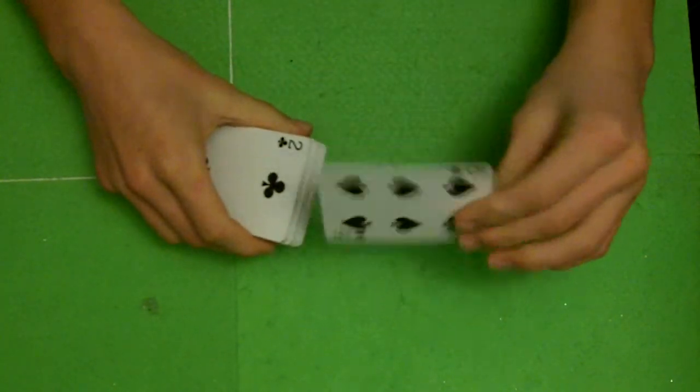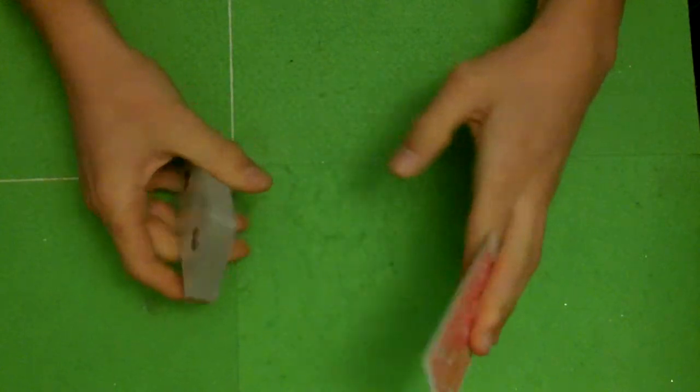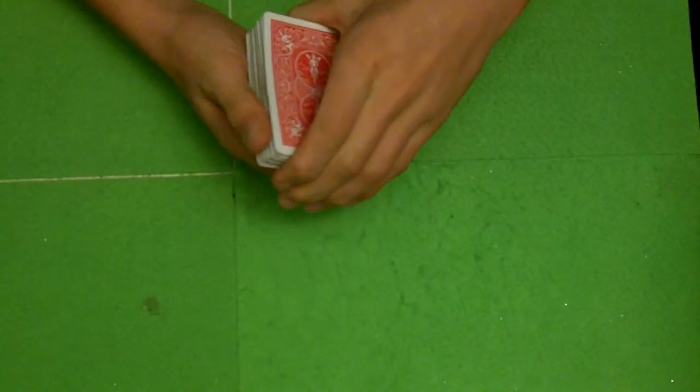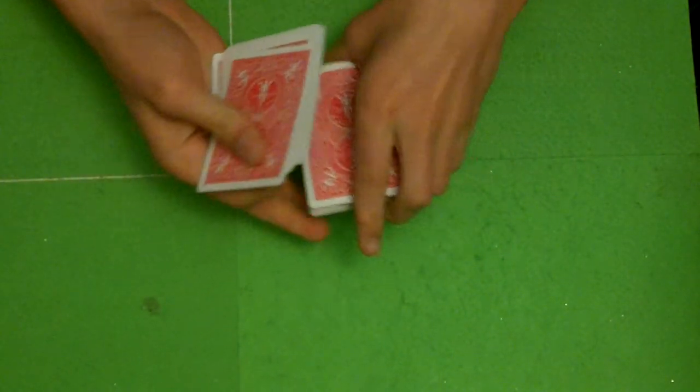So we'll show them, six of spades, okay, you tell them to place it right here on top and now we'll give the card a few cuts.